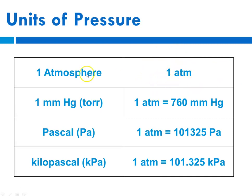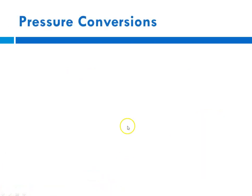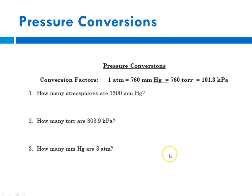So the units that we use for pressure are atmospheres. So one atmosphere is the same as 760 millimeters, and that's the same as 760 torr. And then the SI unit for pressure is called a pascal, and one atmosphere is the same as 101,325 pascals. To make it easier, we use a kilopascal. So one atmosphere is 101.325 kilopascals, which is the same as 760 millimeters of mercury. I know, that's a lot of stuff.